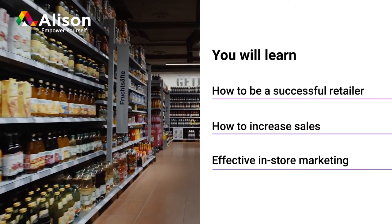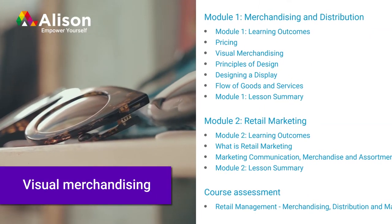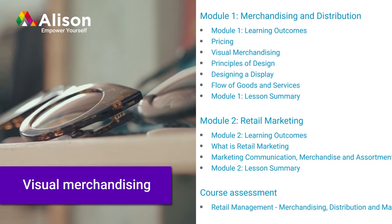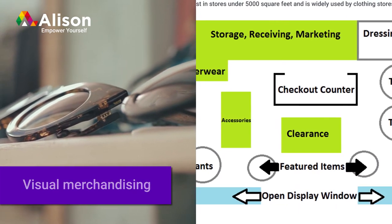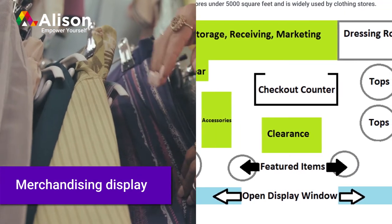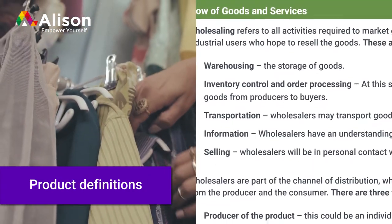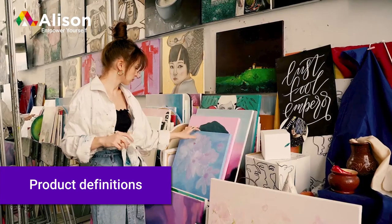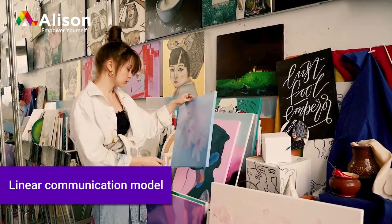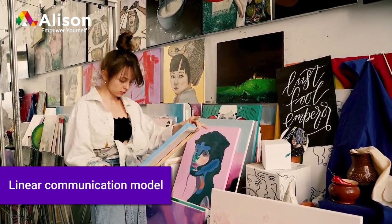When you've completed this course, you'll be able to explain how visual merchandising can affect sales, design a merchandising display, define product mixes, lines, and individual products, and explain the linear communication model.